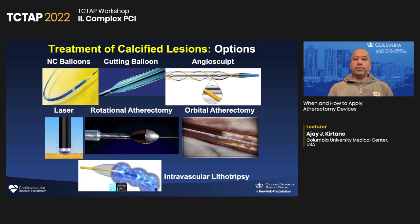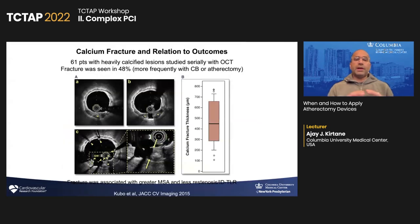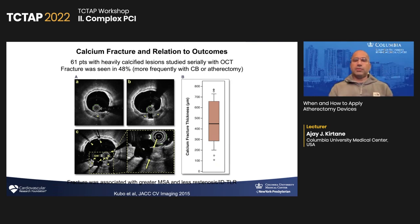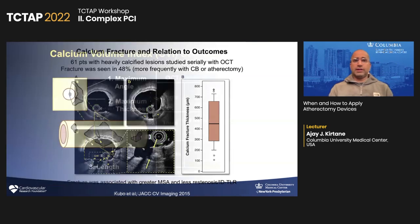We have many options: balloon-based options and atherectomy-based options. Irrespective of what we use to treat these lesions, calcium fracture is one of the most essential features needed. If you have a tube constraining your stent, the only way the stent is going to expand is if that tube is cracked. It's been shown that if you have a fracture, it's associated with greater MSA, less restenosis, and less TLR.